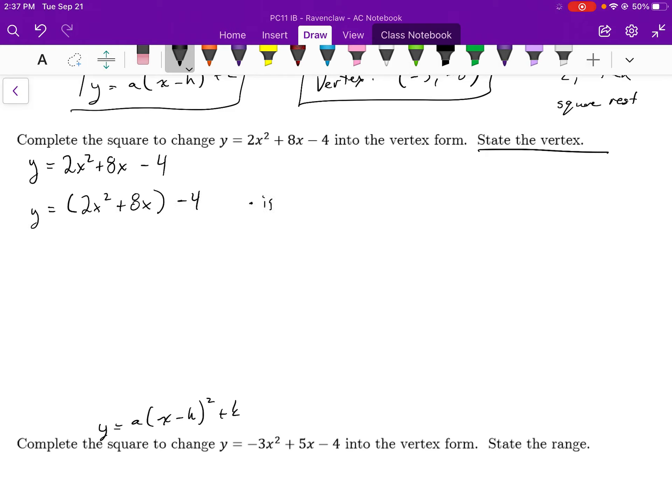So if you notice, I'm going to isolate the x's. But this factor of 2 is causing troubles. I can't play the complete the square game because the coefficient in front of the x must be 1.